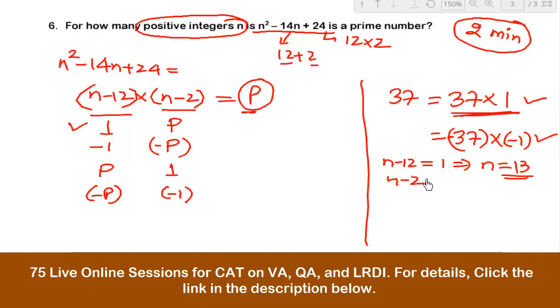So the value of n - 2, the other term, will become what? For n is equal to 13, it will be 13 - 2, which is 11. So here the value of p would be 11. So can I say this would be the answer or a part of the answer?